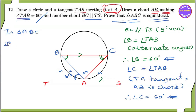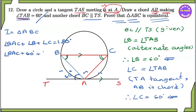Angle BAC, angle BCA, D — 180 degrees. Angle BAC, angle BAC, down BAC, down CAC, D — equal to 180 degrees.